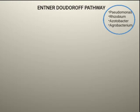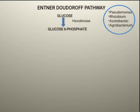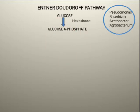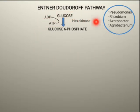In the EDP pathway, glucose is converted into glucose-6-phosphate. This conversion requires a specific enzyme called hexokinase. Hexokinase adds a phosphate group to glucose at carbon number 6. The phosphate comes from ATP, which is converted to ADP, releasing a phosphate onto carbon number 6 — converting glucose into glucose-6-phosphate.